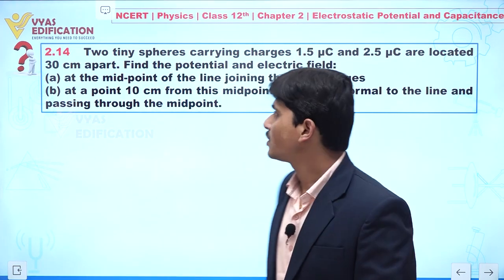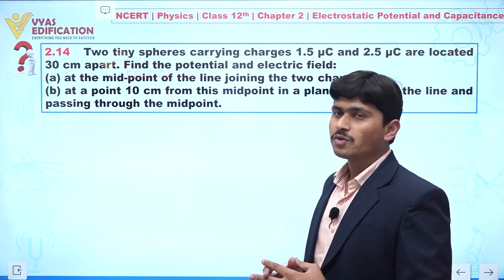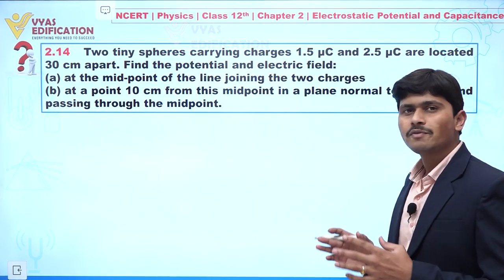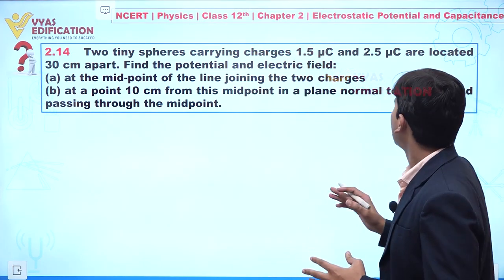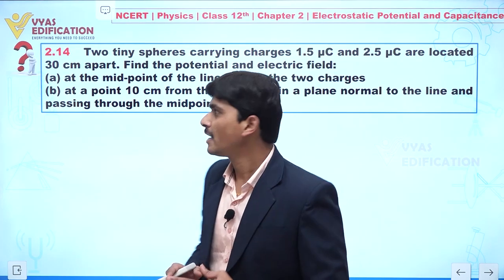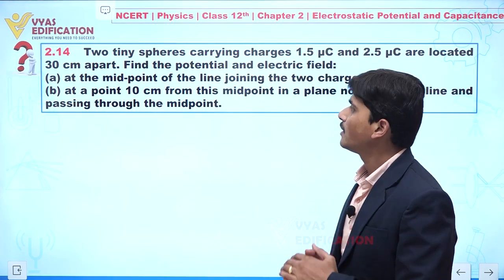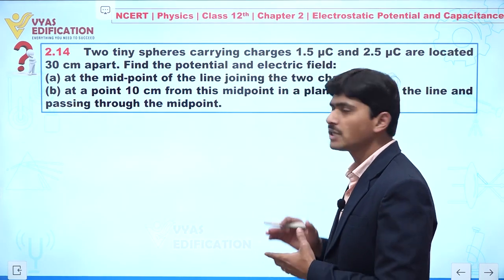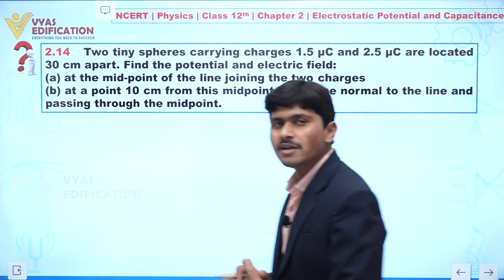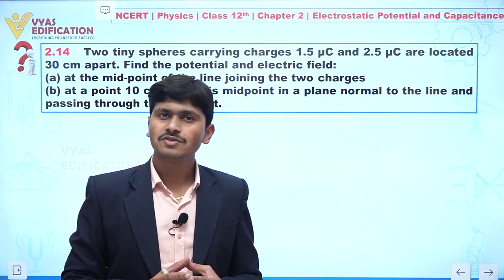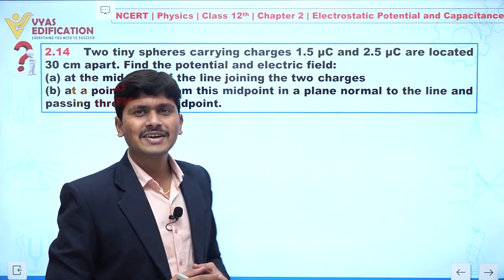We are going to discuss question number 2.14. In this question, two small spheres carrying charges 1.5 microcoulomb and 2.5 microcoulomb are located 30 centimeters apart. We have to find the potential and electric field at the midpoint of the line joining the two charges, and also solve a second part. First we will analyze the given situation and then solve the question.